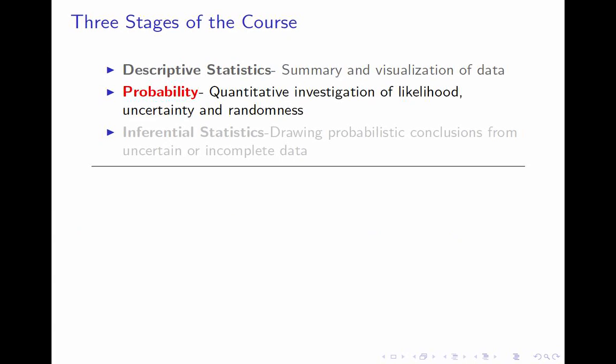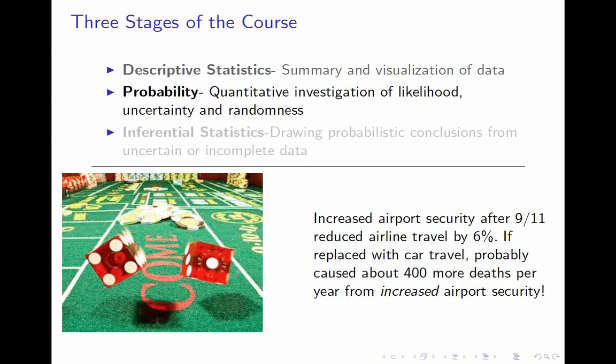Probability is going to be the most mathematical part of the course and in some sense the most abstract, but we will get fairly concrete with real-life examples. Gambling is a great example of probability. We'll also talk about truly practical matters — like how the increase in airport security after 9/11 caused a 6% reduction in airline travel. Most of those people drove instead, resulting in about 400 more deaths per year from car accidents.